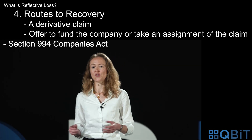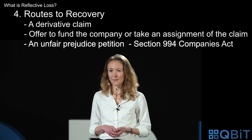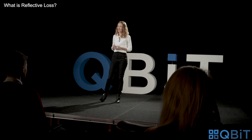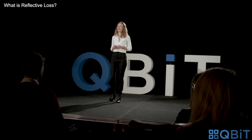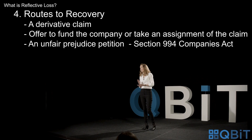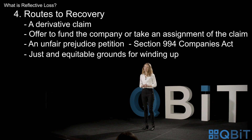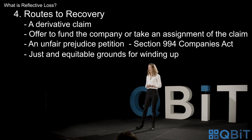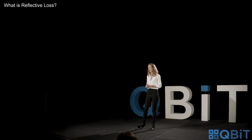If the company is still solvent, a third option might be an unfair prejudice petition under section 994 of the Companies Act. Section 994 applies when a shareholder can show that the company's affairs have been conducted in a way that's unfairly prejudicial to that shareholder, or that something has been done or will be done that's going to unfairly prejudice the position of that shareholder. The court has a very broad discretion as to the relief it can grant under section 996 of the Companies Act, but the usual order is that the petitioner's shares are bought out for fair value. Finally, if the facts are right, you might look at winding up the company on the just and equitable ground under section 122 of the Insolvency Act — this might be appropriate if the wrongdoer is a director who has behaved in such a way that you can justifiably say there's been a loss of confidence in the management of the company.